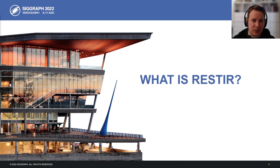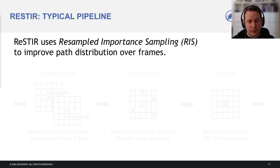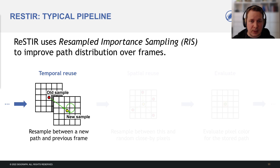So what is ReSTIR again? ReSTIR is reusing samples from other frames and pixels by resampled importance sampling (RIS) for a better path distribution. Pixels store a sample and its contribution weight, which replaces the division by PDF in Monte Carlo integration. Each pixel generates a new random sample and resamples between it and the previous frame by weighted RIS.